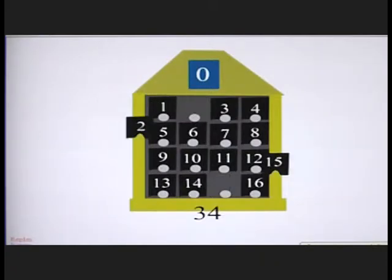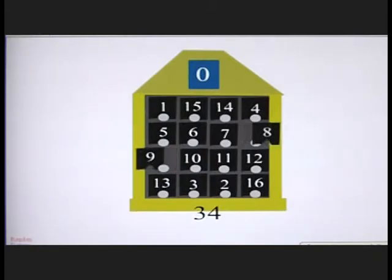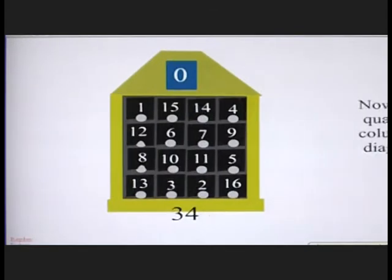Now let's switch around a few of those blocks and we will discover that we can make the rows, columns, and diagonals in this configuration each add up to 34.